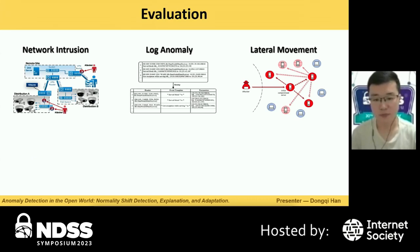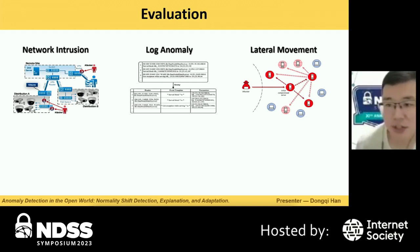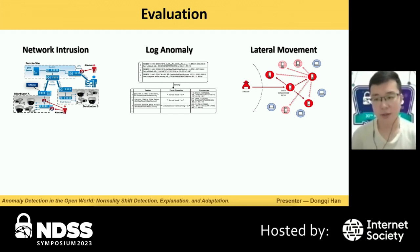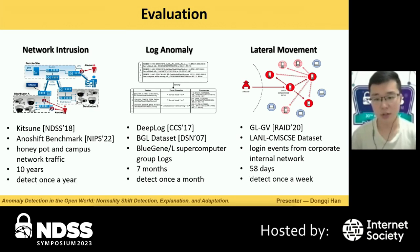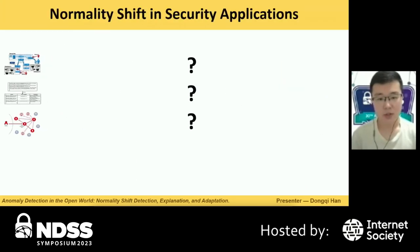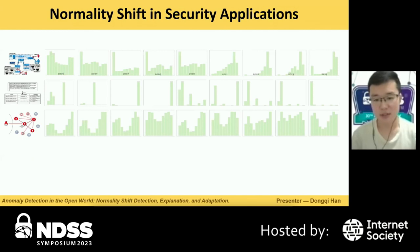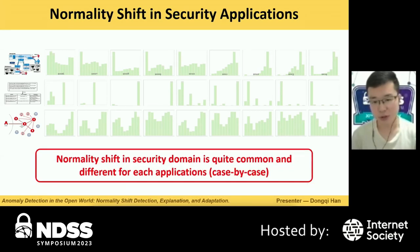We evaluate OWAD in three security applications: detecting network intrusion, log anomaly, and data exfiltration. We use representative detection systems from top-tier conferences and select datasets with a long time span — in months or years — to reflect normality over a long period, detecting shifts periodically. The first question we ask is whether normality shift occurs in these security applications. The answer is yes. From the distribution figures over time, normality shift in the security domain is quite common and different for each application, so case-by-case analysis with our explanation method is necessary.